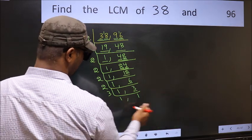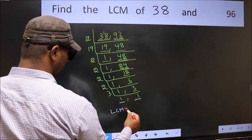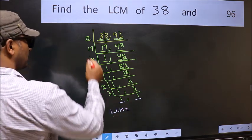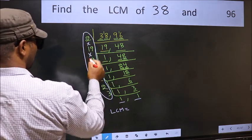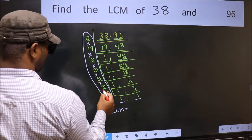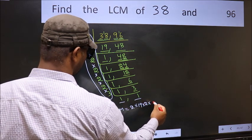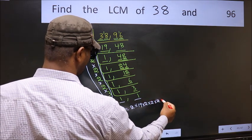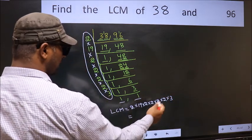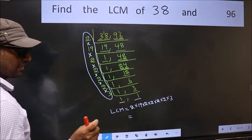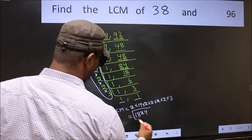We got 1 in both places, so we stop. The LCM is the product of all the divisors: 2 × 19 × 19 × 2 × 2 × 2 × 2 × 2 × 3. When we multiply these numbers, we get 1824, which is our LCM.